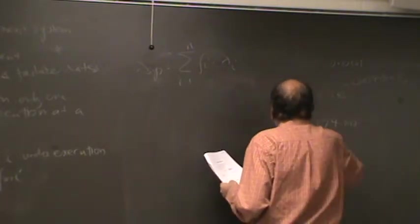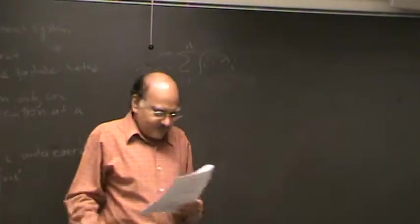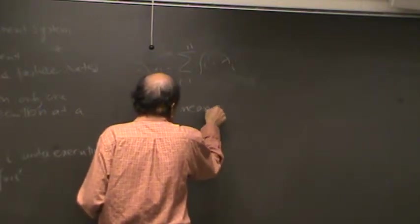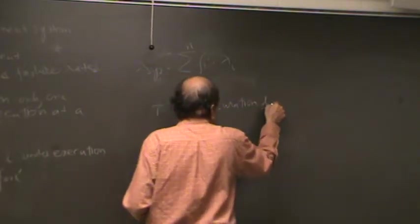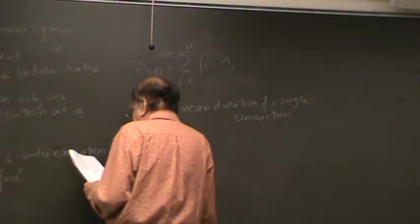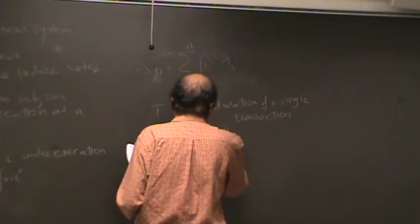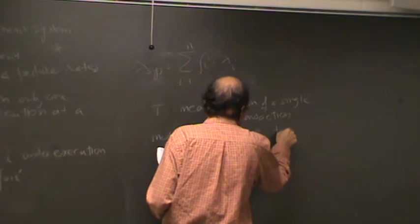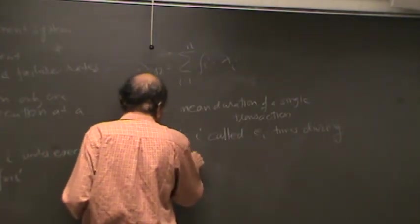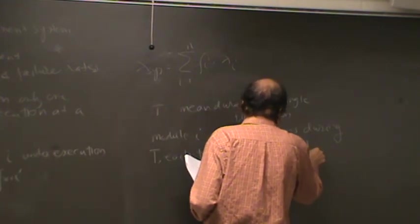So now let us expand this a little bit. Let us assume that the system is running some transactions. And let us say that T is the mean duration of a single transaction. And module i is called t sub i times during T. Each time executed for, on the average, t sub i point zero six.